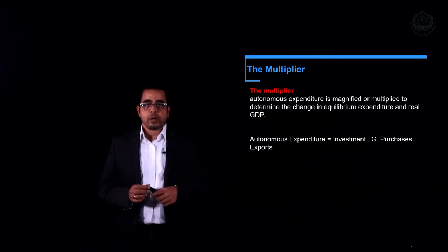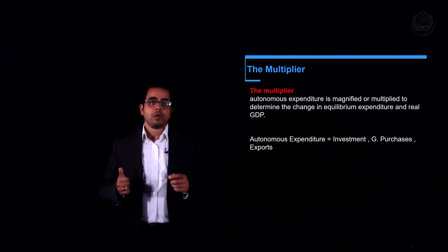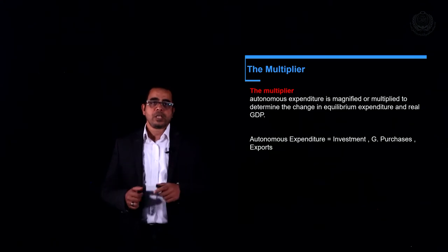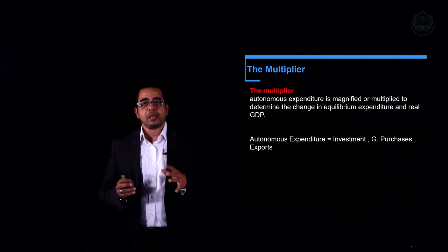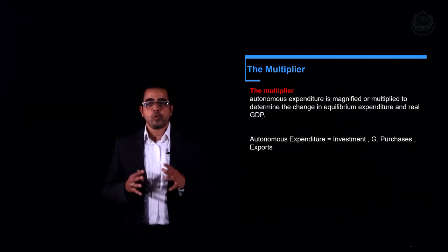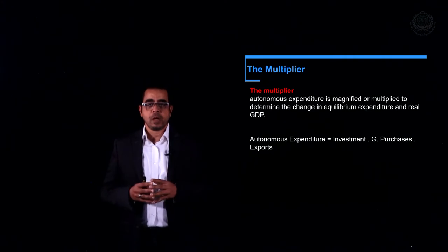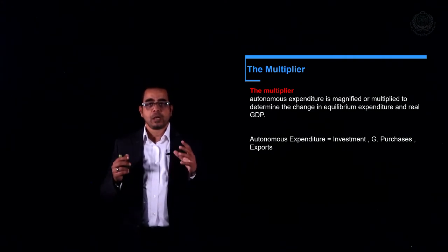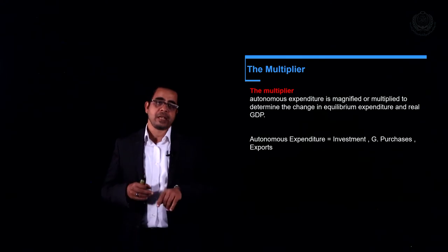Welcome everyone to our unit 3, the multiplier. In this unit, we're going to talk about the multiplier, which indicates that there is a bigger change in GDP due to a change in autonomous expenditure. Autonomous expenditures are investment, government purchases, and exports.